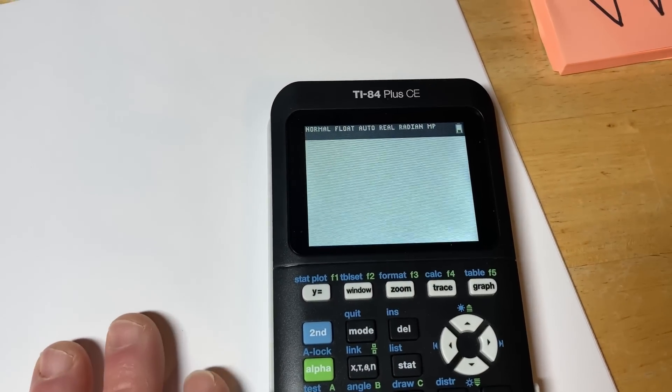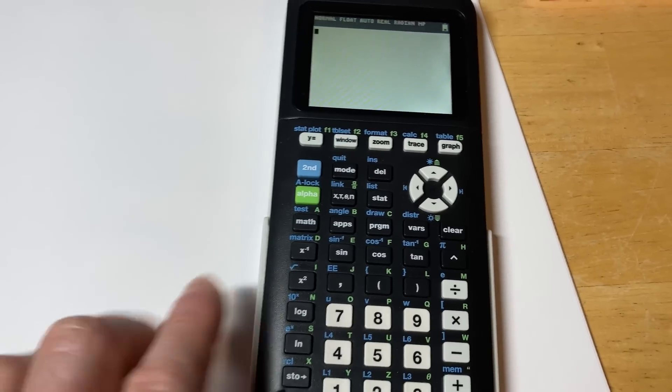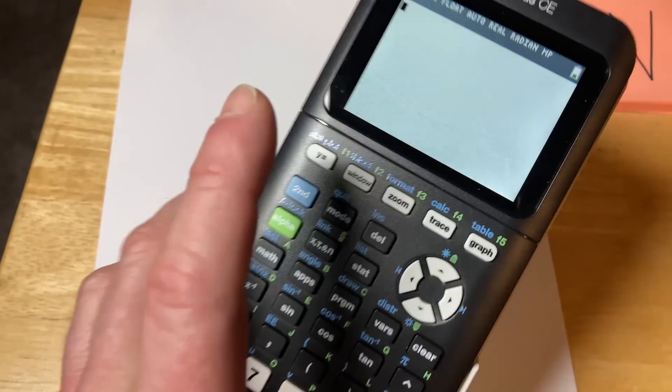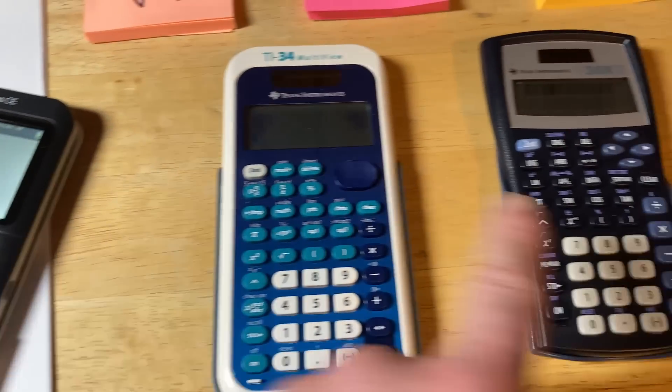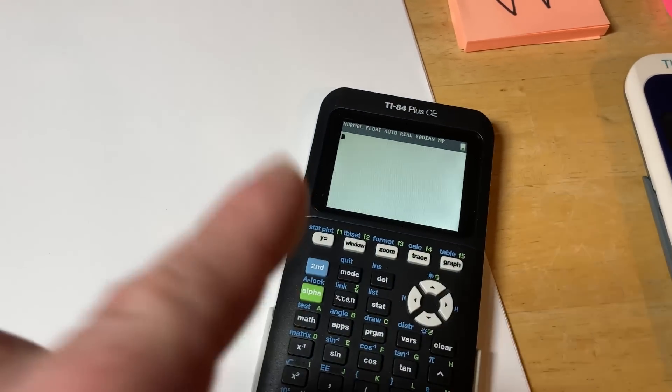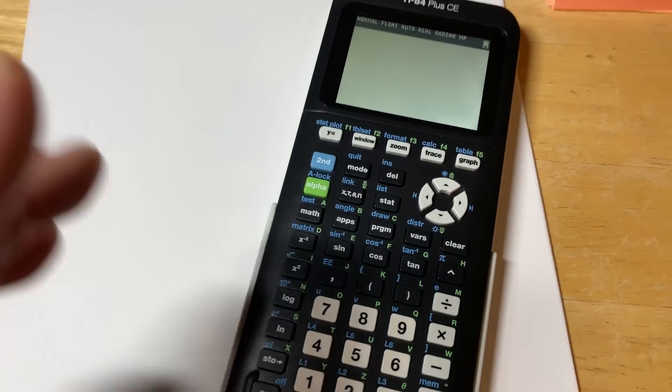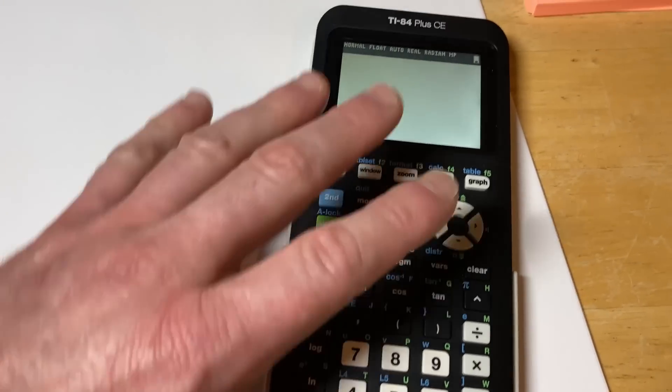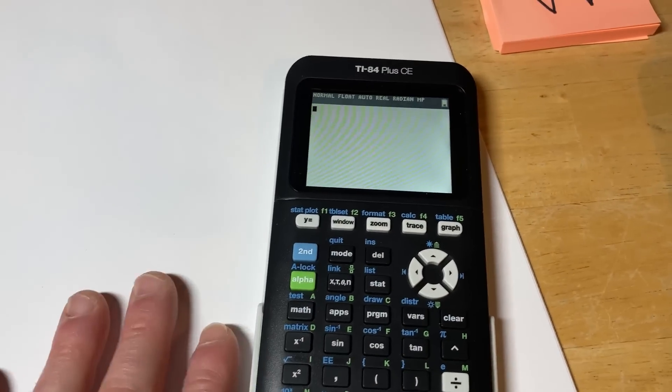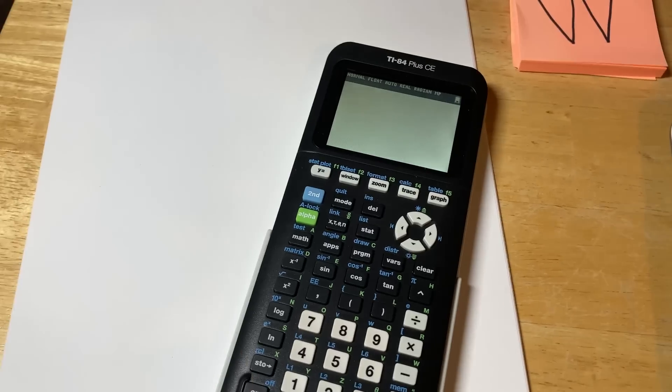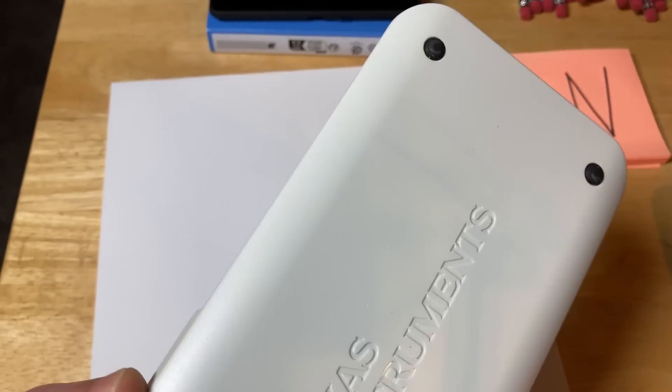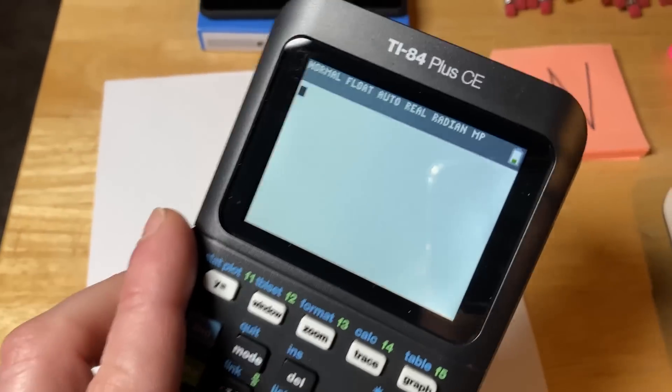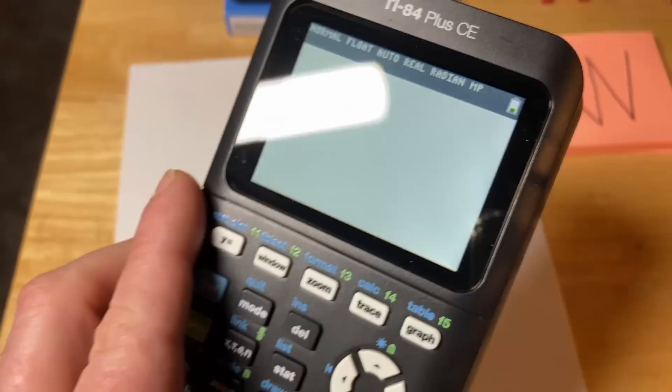This is the TI-84 Plus CE. This is a graphing calculator and it is absolutely incredible. Probably one of the most popular calculators in the world right here. The reason this one is so popular is because number one, it's a graphing calculator. These are not graphing calculators. None of the calculators I've shown you today are graphing except this one. Also, this one does not have a computer algebra system. So it's not going to do integration. It's not going to do differentiation. You might say, oh no, that's not good. You're right. It's not good.